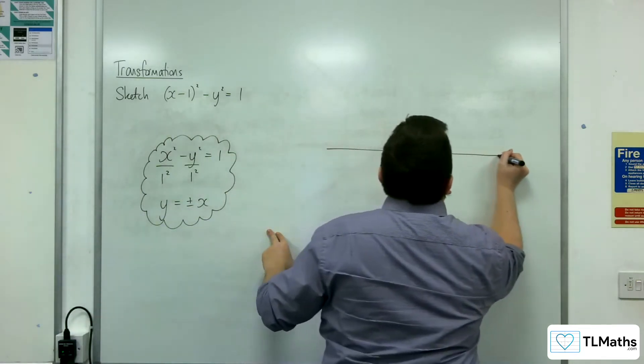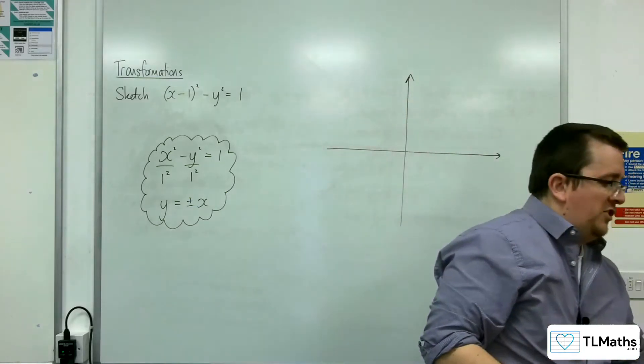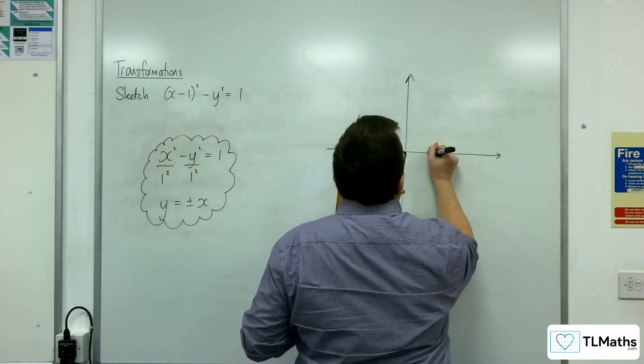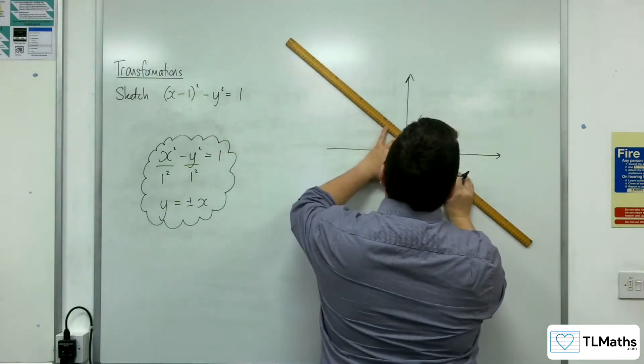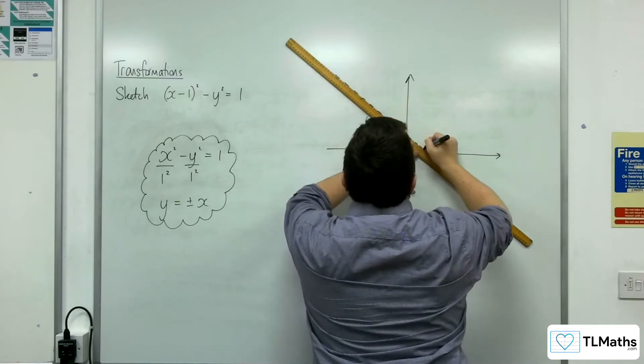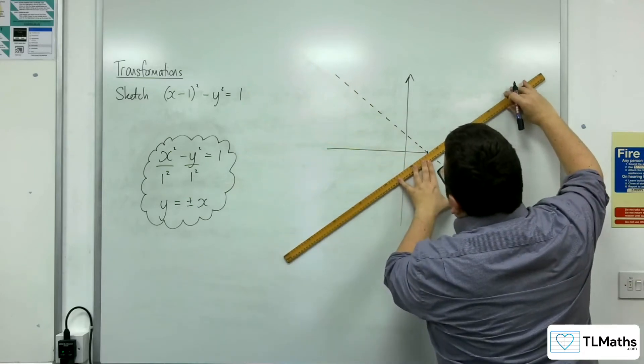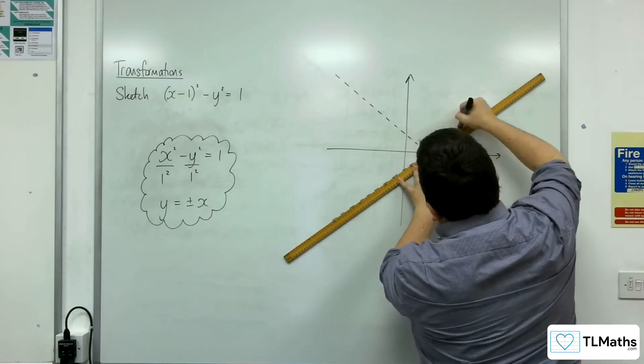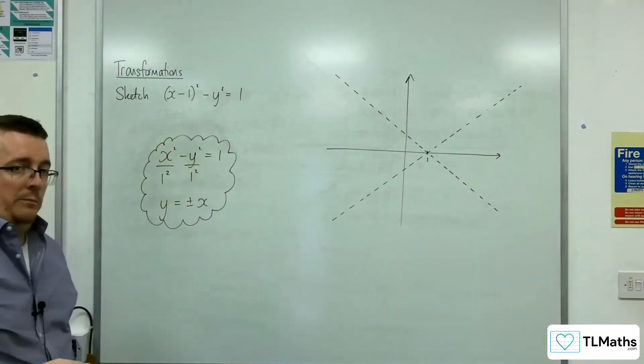So if you know what y equals plus or minus x look like, they are two lines that go through the origin. These two lines will go through 1, 0.